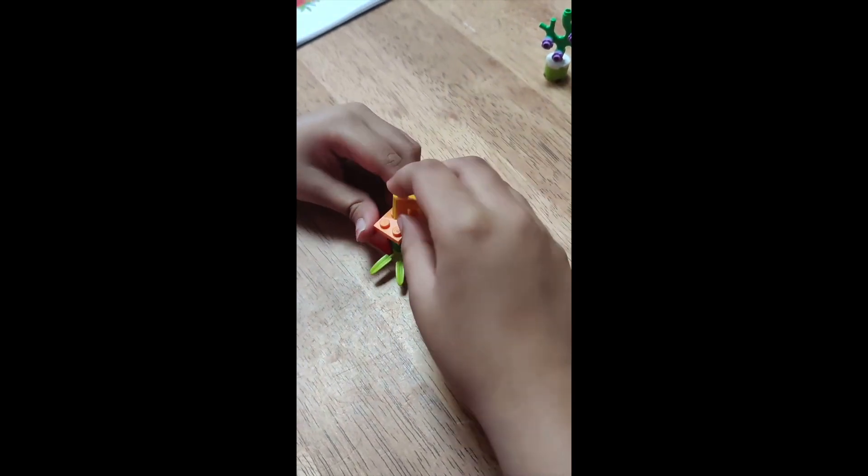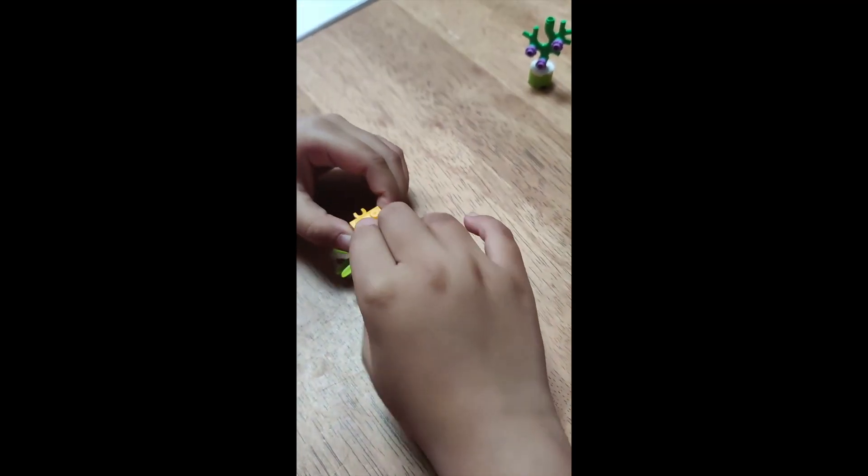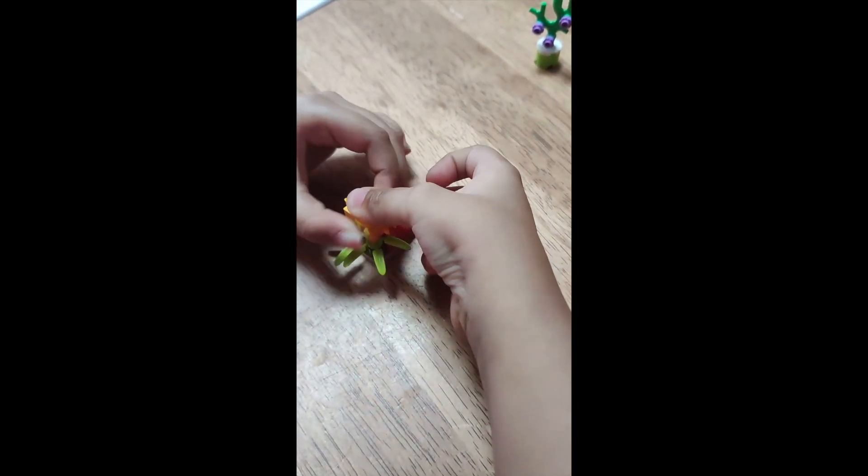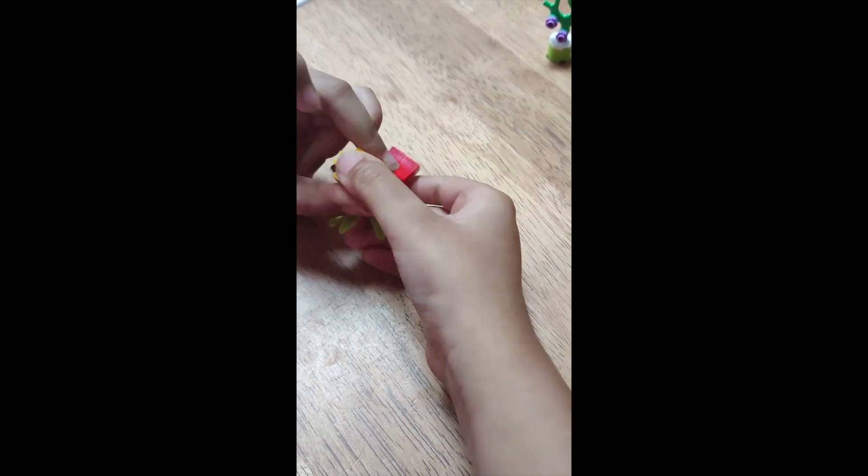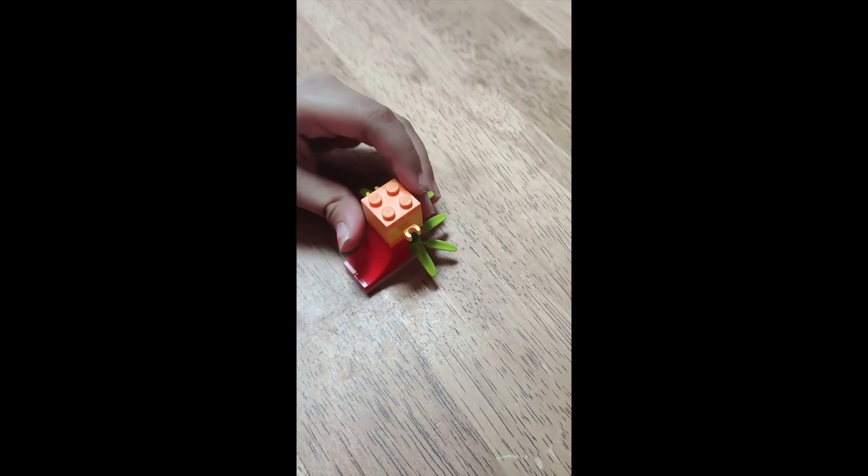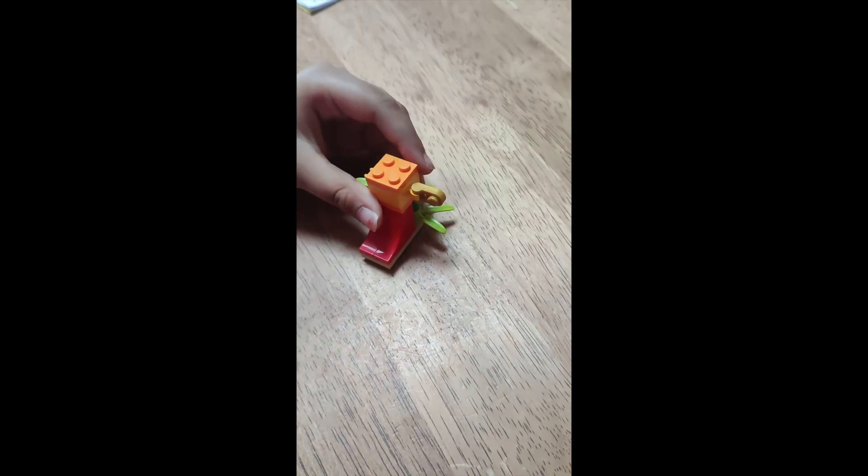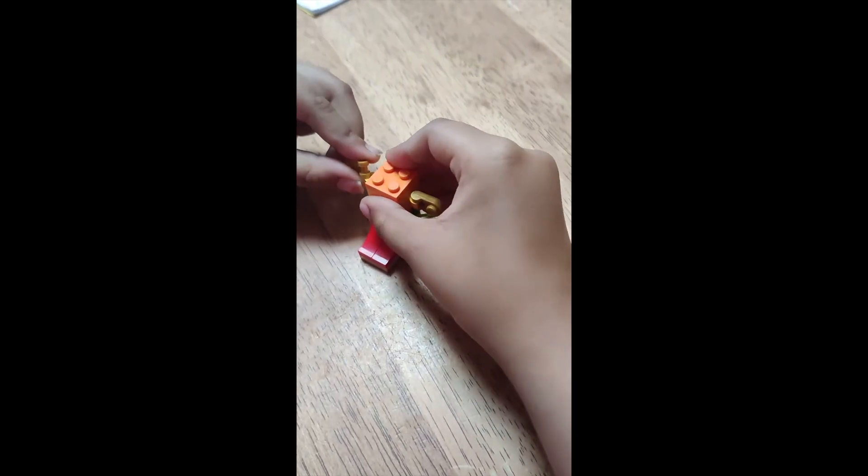Then on top of it we put these two pieces on each side. And on top of it again we put another orange plain piece. Then we put two of these things on each side of the holders.